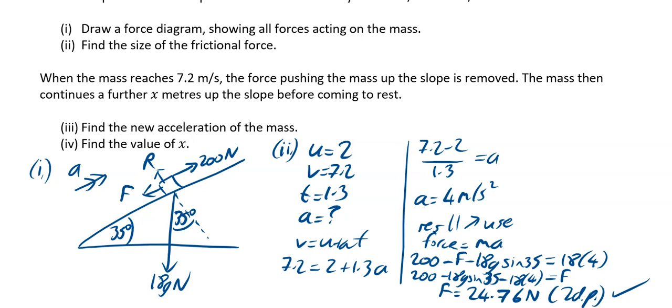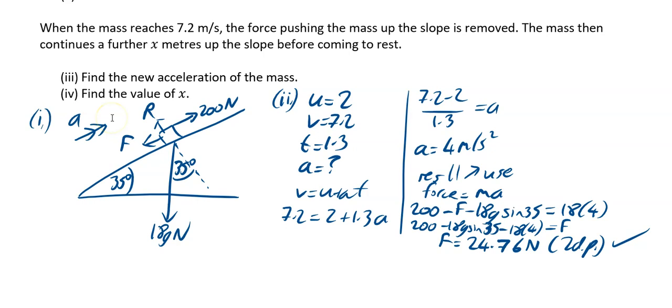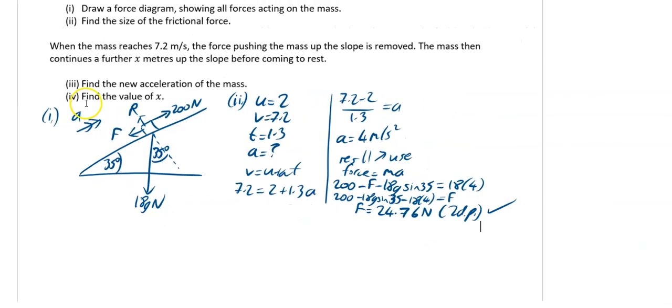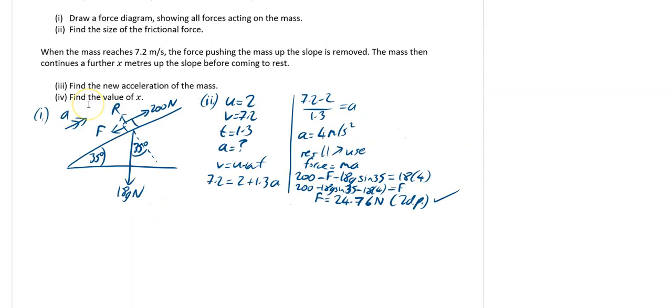So there's part 1 and part 2 done. Part 3 and 4 then, it's like a separate question. It says, when the mass reaches a speed of 7.2, the force pushing the mass up the slope is removed. The mass then continues to further x meters up the slope before coming to rest. That means something's changed. That means we need a new diagram. So we'll zoom out a wee bit just to allow me to see this so we can draw our diagram.